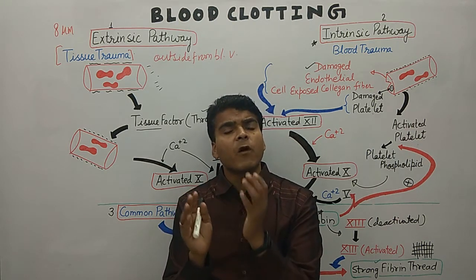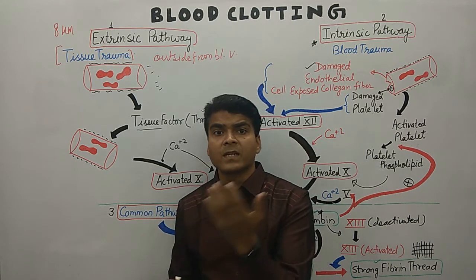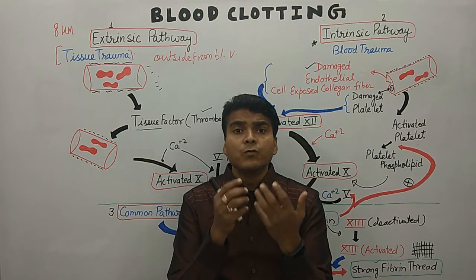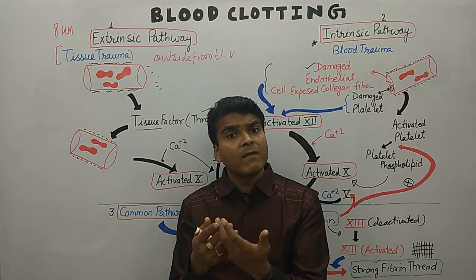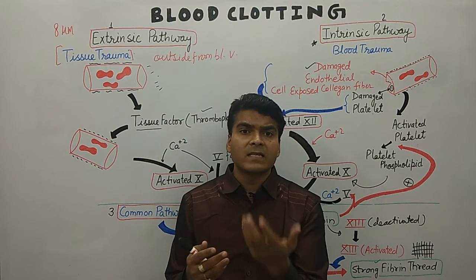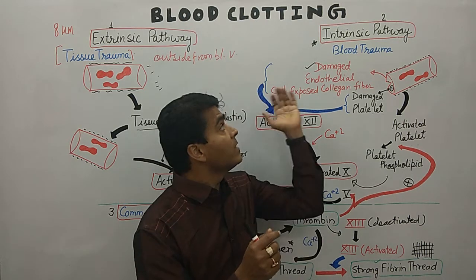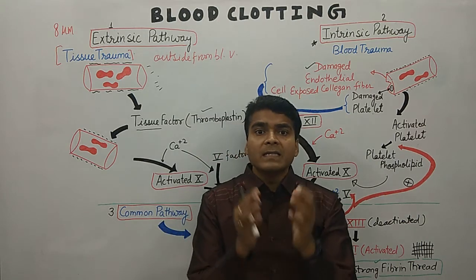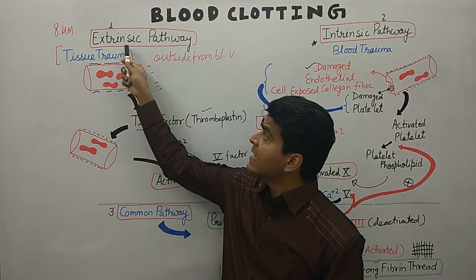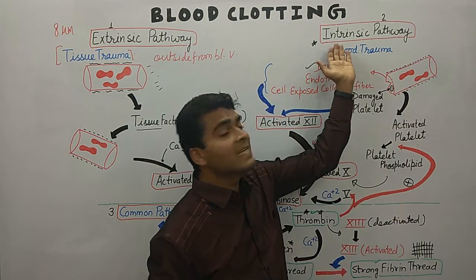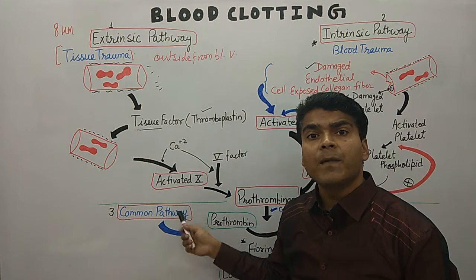In hemostasis, we've already discussed vascular spasm as well as platelet plug formation. Now the third point, which is useful to stop bleeding in larger as well as smaller blood vessels, is known as blood clotting. In blood clotting, there are three pathways: the first is the extrinsic pathway, the second is the intrinsic pathway, and the third is the common pathway.